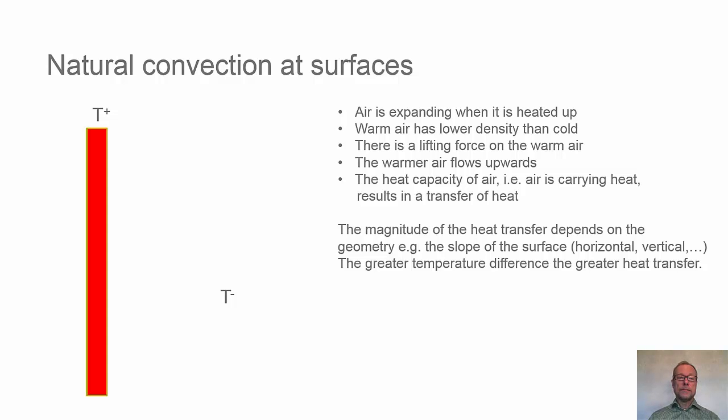Natural convection at surfaces. On the left-hand side, we see the red bar which symbolizes a warm wall with the temperature T+, a warmer wall than the surrounding air which has the temperature T-. And when this indoor air comes in contact with the hot or the warmer wall, it will get warmer and the density will be lower, and we'll have a lifting force on the warm air.